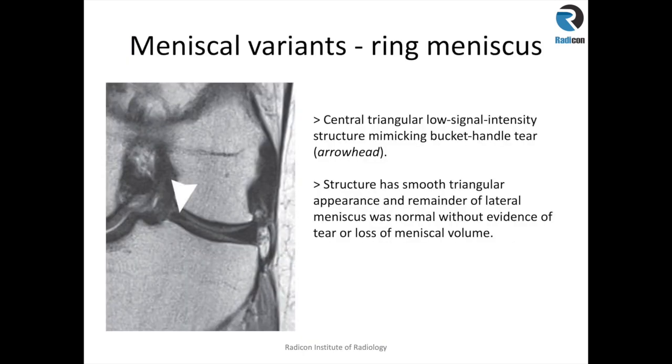Another meniscal variant is a ring meniscus, where you get a central triangular low signal intensity structure which may mimic a bucket handle tear.